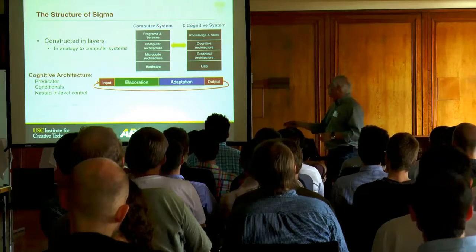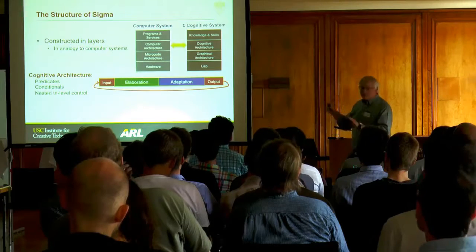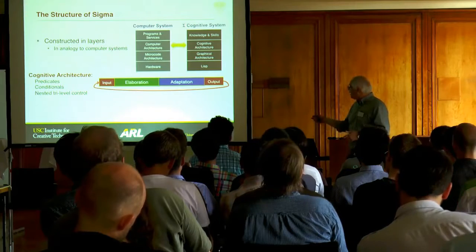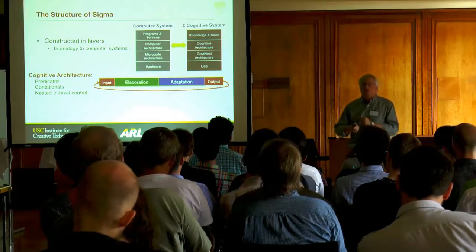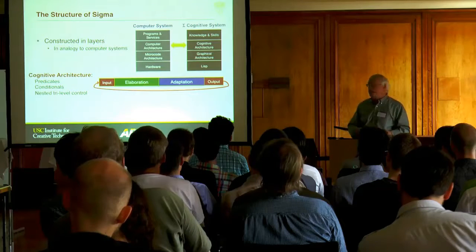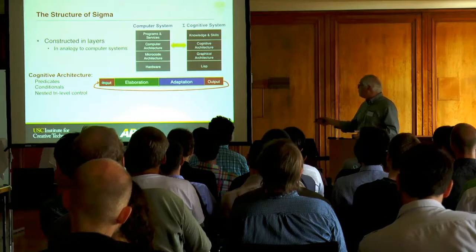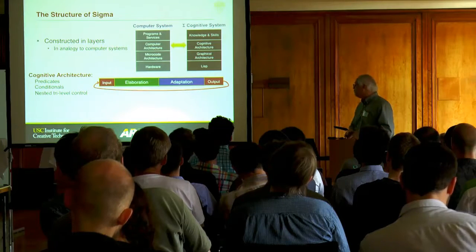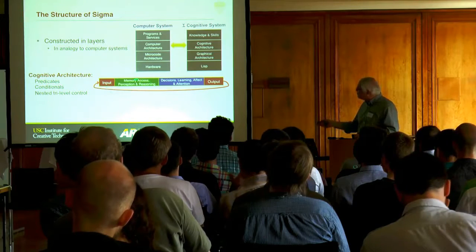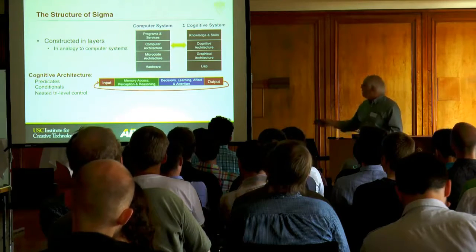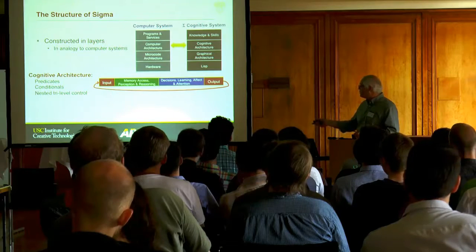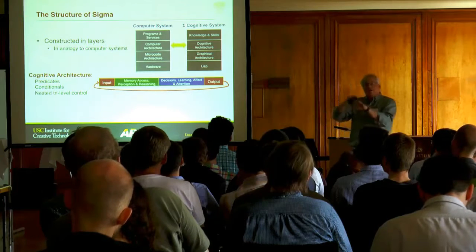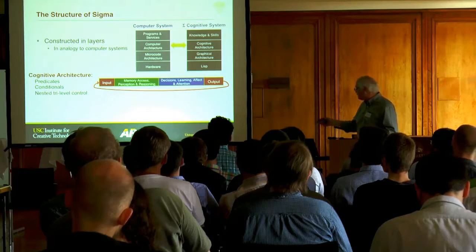It's constructed out of three basic concepts: predicates and conditionals that are the representation language, a tri-level control structure, and a processing loop which maps onto the 50 millisecond cognitive cycle in people. It starts with input, then you elaborate on what you know, then you adapt based on that, and then output. Elaboration combines memory access, perception, and reasoning. Adaptation includes decision-making, learning, attention, affect, all of the things that modify how the system behaves.